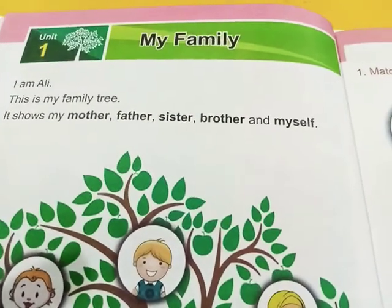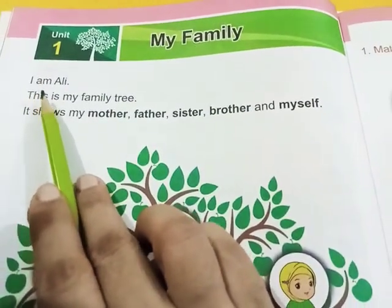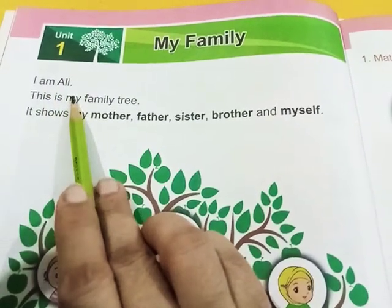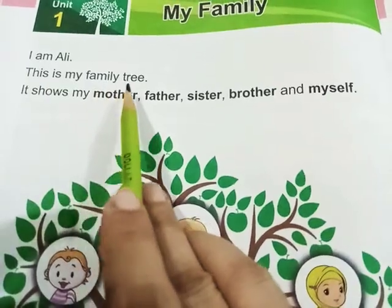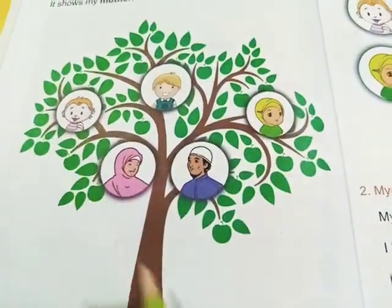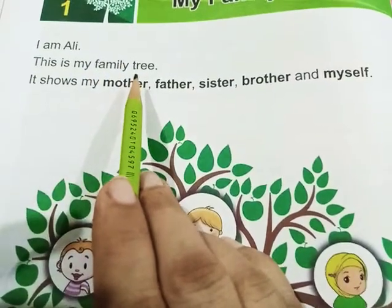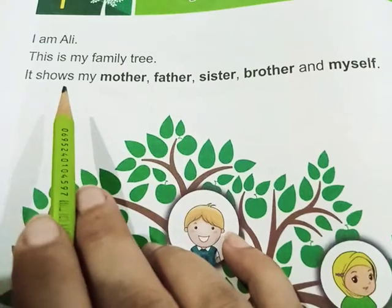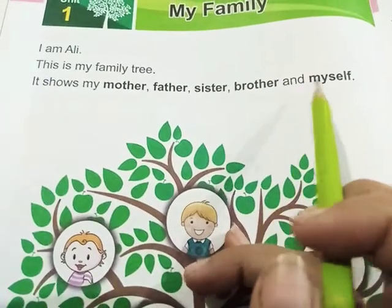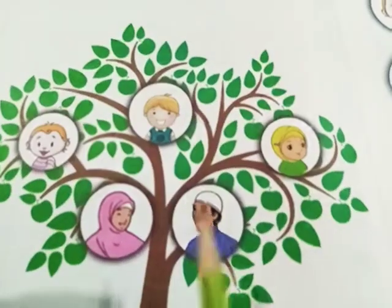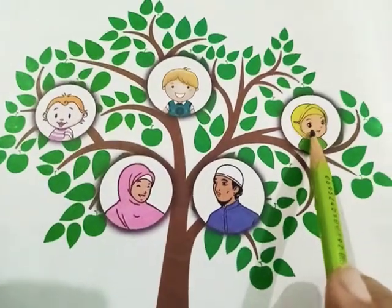Page number one: My Family. Unit one — My Family. Bismillahirrahmanirrahim. I am Ali. This is my family tree. It shows my mother, father, sister, brother, and myself.